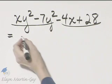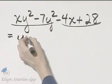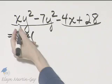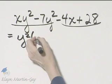The first two terms, there's a common factor of y squared. When I factor that out, I'll have x minus seven.